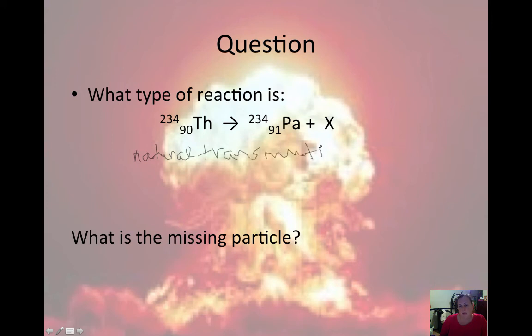Okay, so remember we have to have both sides balanced. So we have 234 over 90. Here's 234 over 91. So how could we get this to balance? We would need a negative 1. And our mass is the same. So this would be our beta particle. So we're missing a beta particle, which you can describe either with the beta with the minus sign or with the electron symbol.